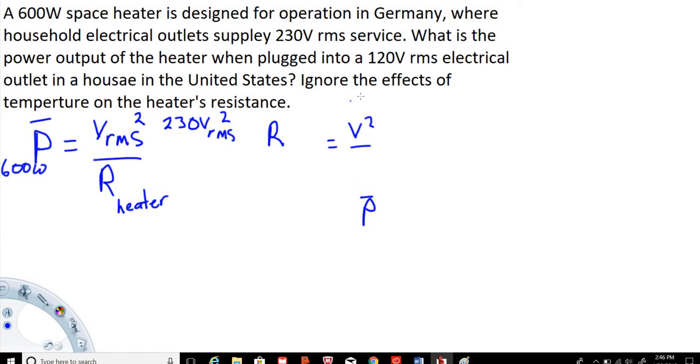Let's pull this in. We have the 230 volt RMS squared divided by the power of 600 watts when it's running in Germany. So we take the voltage squared, 230 squared divided by 600 watts. The resistance of the heater is going to equal 88.16 ohms.